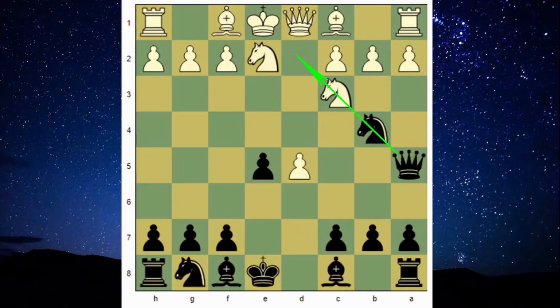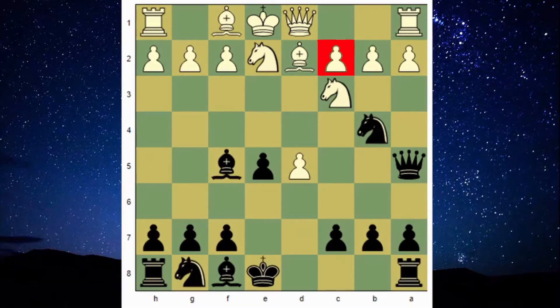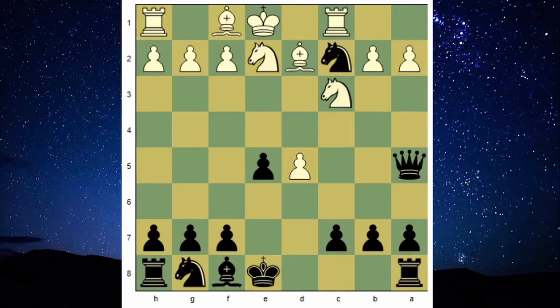After this, black's queen is still keeping the pin on knight along the diagonal, so to lose that pin bishop to d2 is a better move for white. Then we will play bishop to c5 pressurizing the c2 square. White has no other move except rook to c1, then bishop takes c2 attacking the queen.